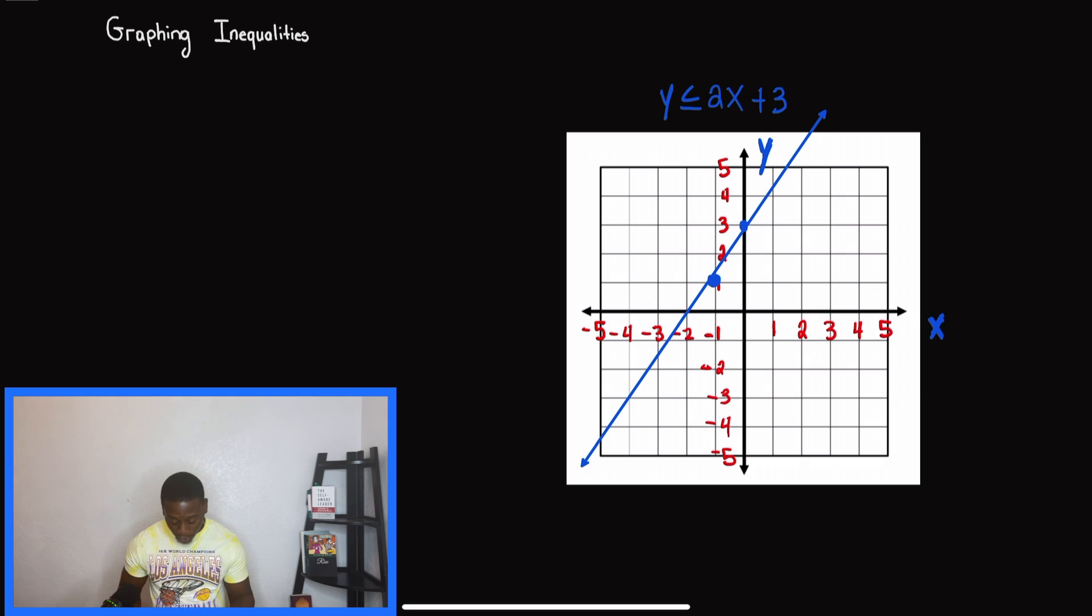When we start off with this subject, the first thing we need to know is how to graph the line. For this inequality y < 2x + 3, we know it's going to have a positive slope. We start with our y-intercept at 3, and then our slope is 2. After we go down 2 over 1, we get our second point for the line.